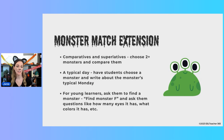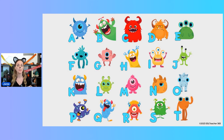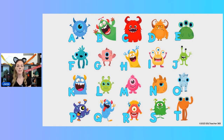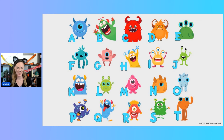If you want to extend this activity, you can also use this same game board to practice comparatives and superlatives. After your students have finished guessing each other's monsters, you can have them compare them. For example, monster E has more eyes than monster H. If you want them to practice superlatives then they'll need more than two monsters, but this is another way to extend the activity and use it with your fast finishers.